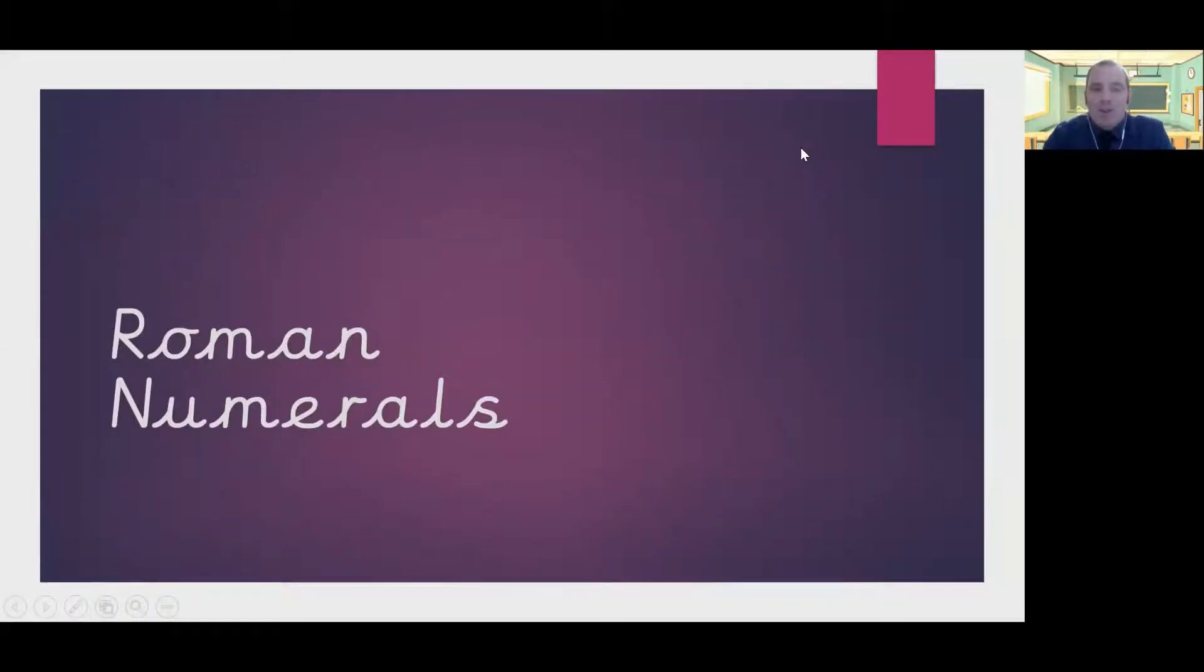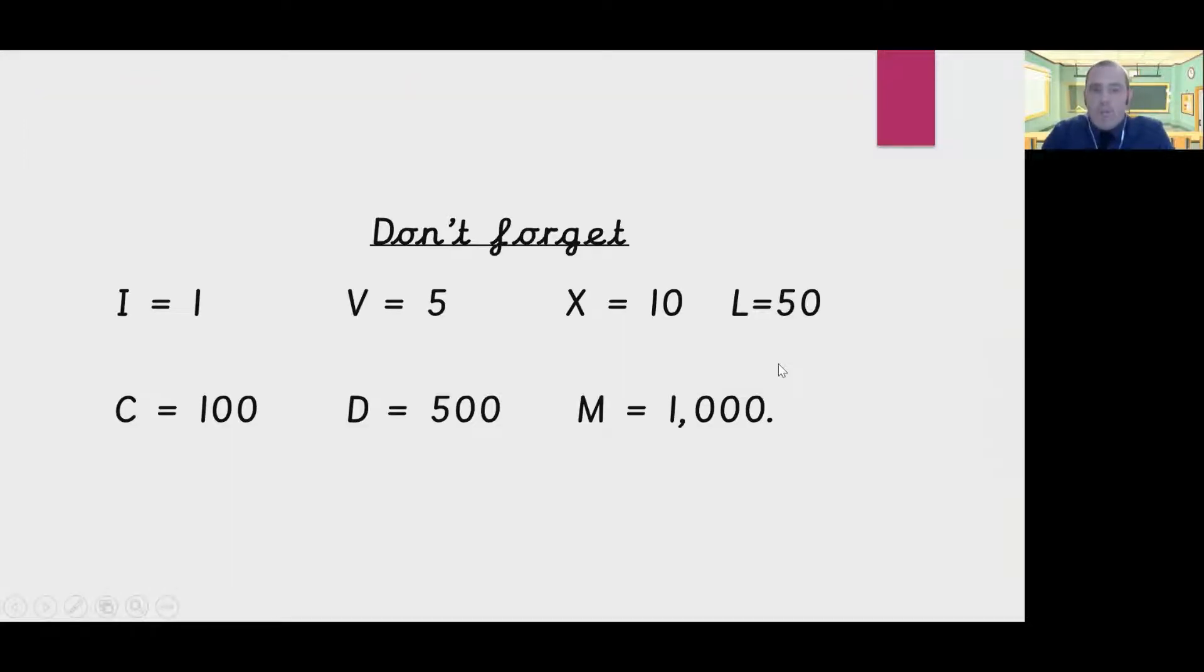Hello, Mr. Hill here with a short video to guide you through how to use Roman numerals. On first look, Roman numerals can be quite confusing because they use letters instead of numbers. For example, I is worth 1, V is worth 5, X is worth 10, L is worth 50, C is worth 100, D is 500, and M is worth 1,000.